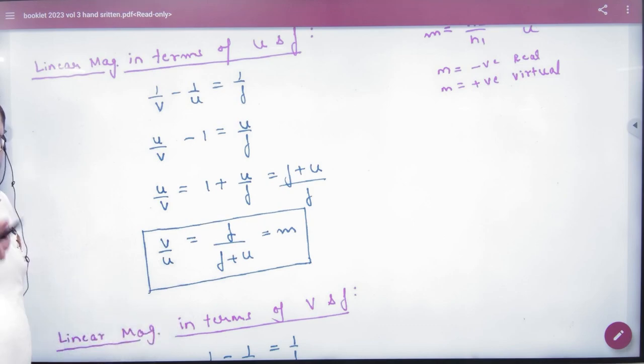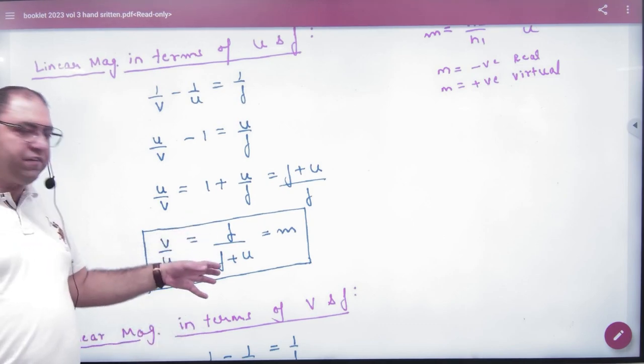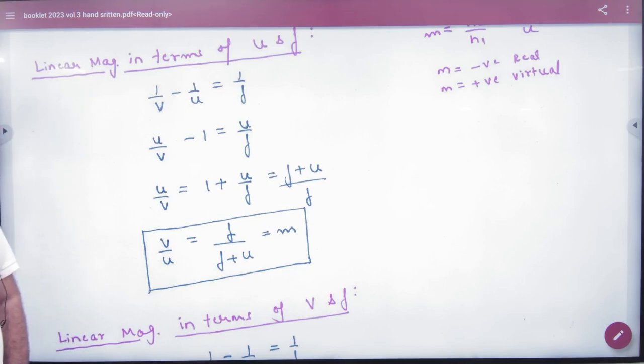M is equal to F upon F plus U. So many times in question there will be magnification given, you will have F given and you will have U. So what is the relation between M and U? Use this. M is equal to F upon F plus U. Very important formula.